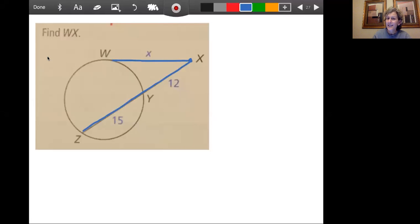So once again, because they intersect outside the circle, it's still outside times the whole equals outside times the whole. The only interesting thing is this one here, this segment here, this tangent is the outside and the whole.